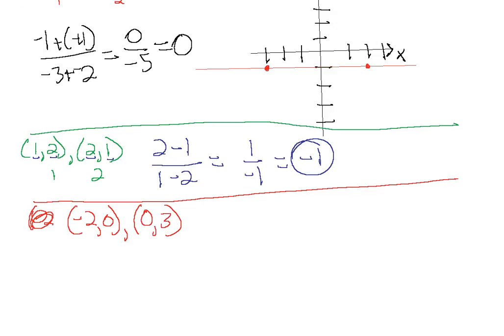So using our slope formula, we have the difference in the y-coordinates. So we have zero minus three, and divided by the difference in the x-coordinates. So we have minus two minus zero. So we have a minus three in the numerator, and a minus two in the denominator. The negative signs cancel, so we stick with a three over two. So that's our slope here.